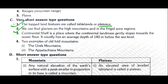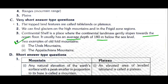Question 2: Where can you find glaciers? We can find glaciers on high mountains and in the frigid zone regions. Question 3: Define continental shelf. Continental shelf is a place where the continental land mass gently slopes towards the ocean shore; it usually has an average depth of 180 meters below sea level. Question 4: Give two examples of old fold mountains — the Ural mountains and the Appalachian mountains.